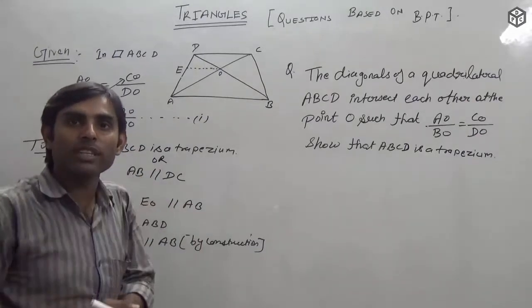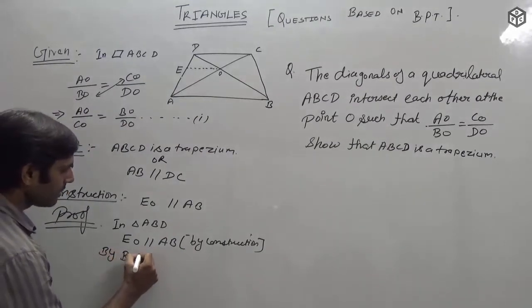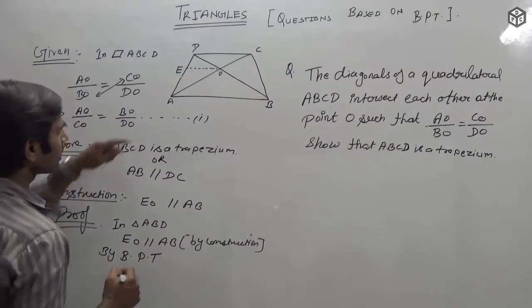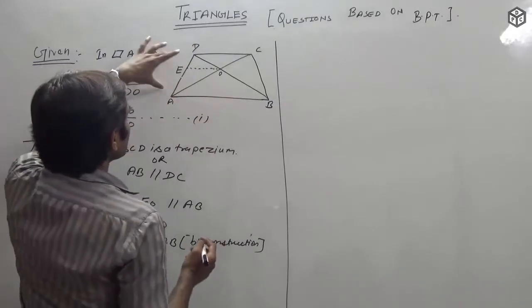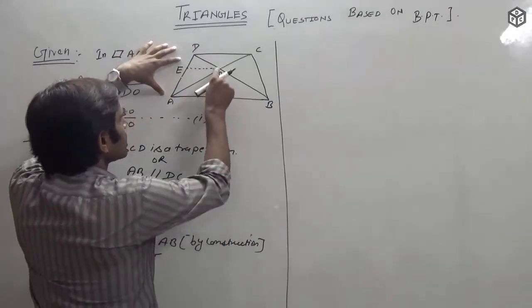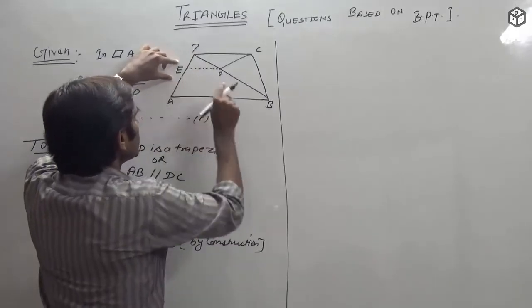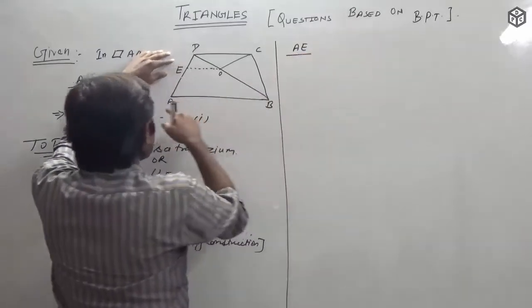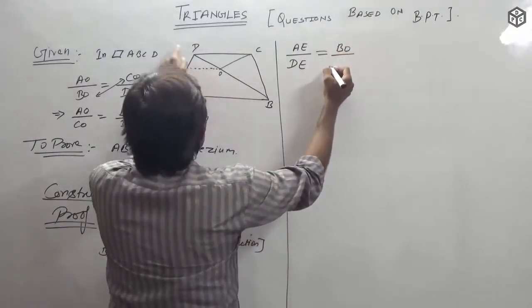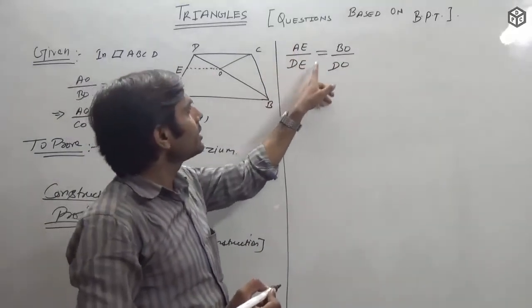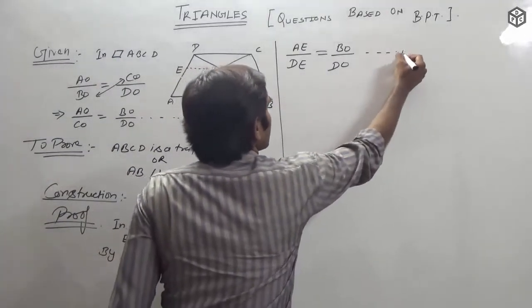If you don't know the BPT theorem, then refer to our earlier lecture where we prove it. Applying BPT in triangle ABD, since EO is parallel to AB, we get AE upon DE is equal to BO upon DO. This is equation number 2.